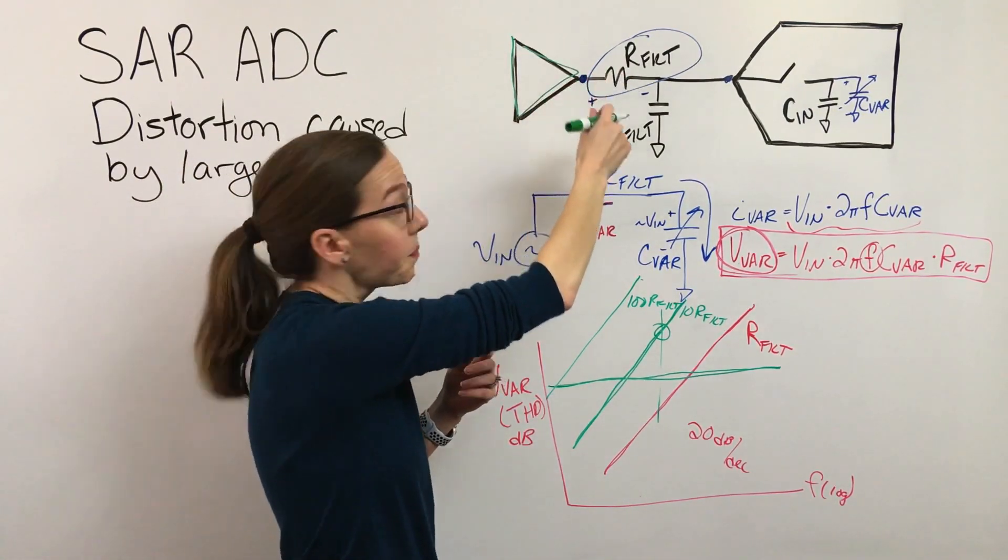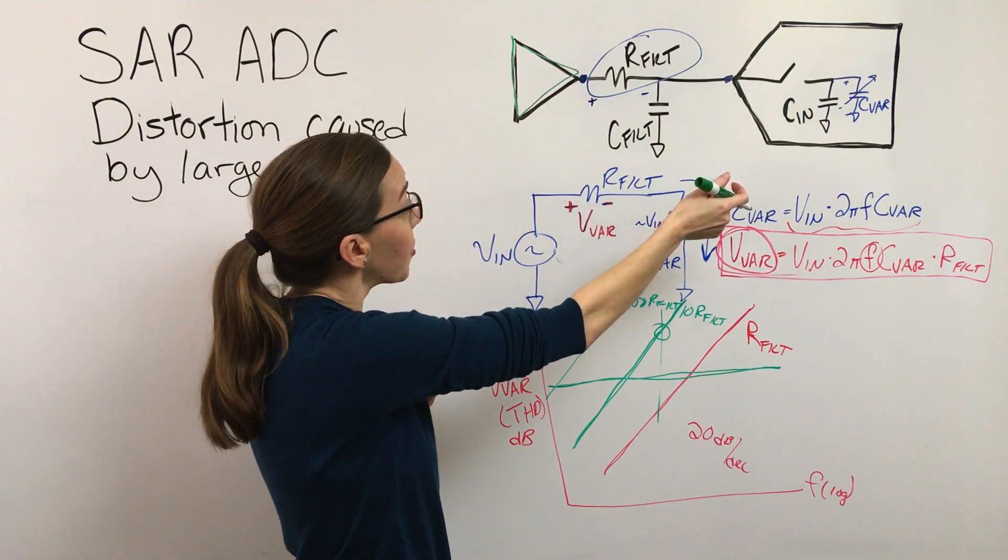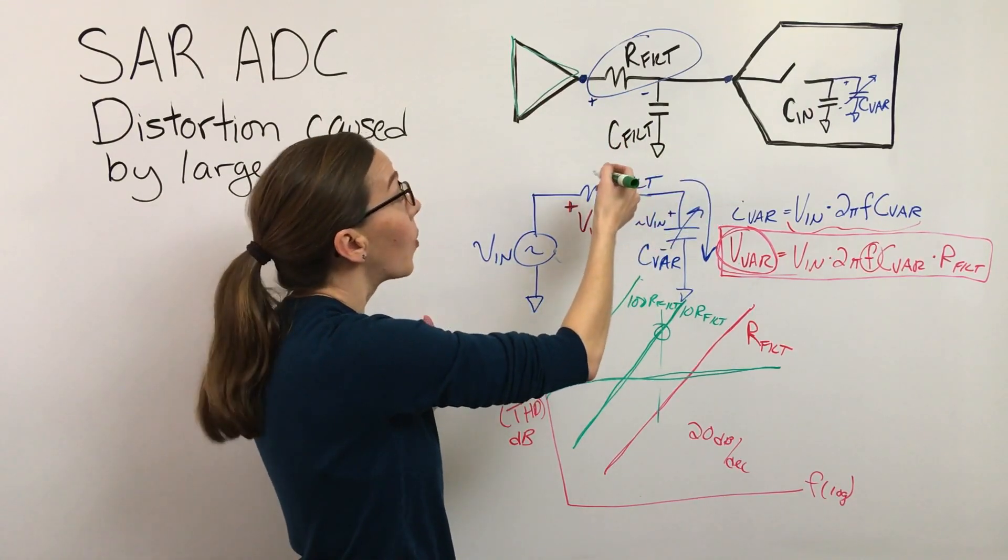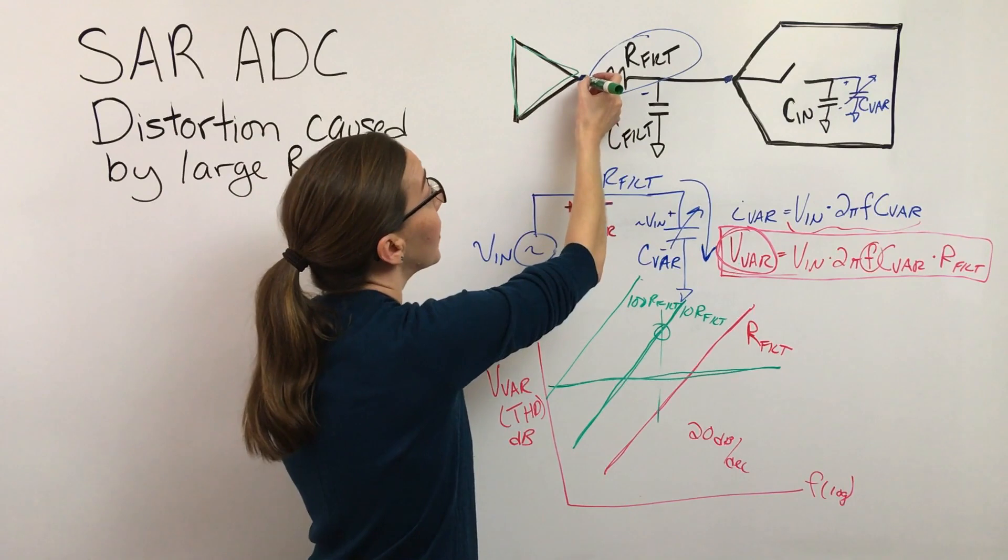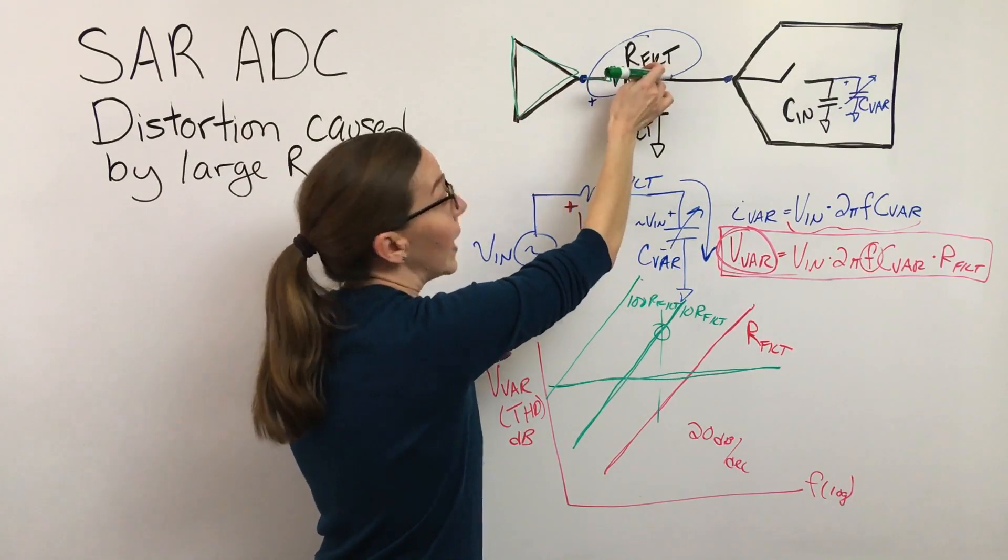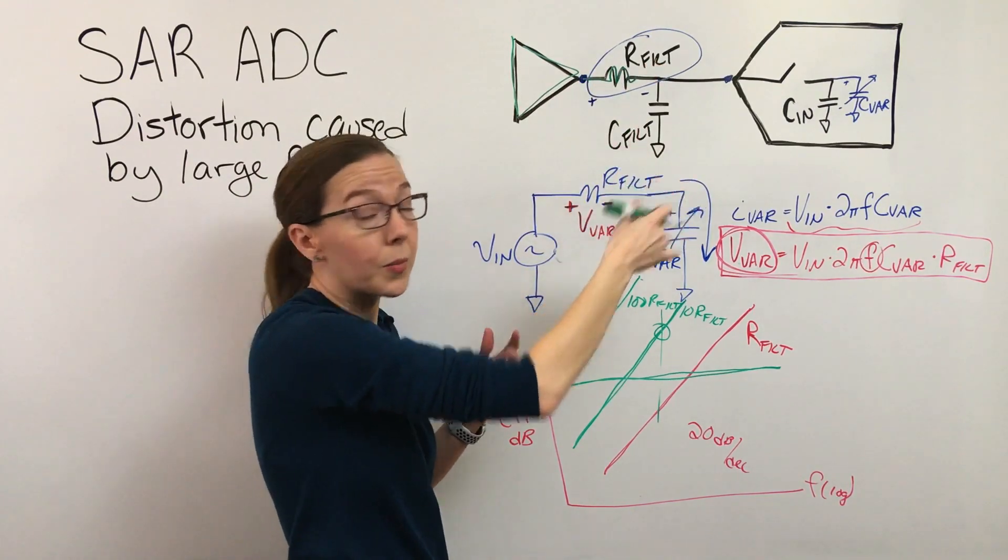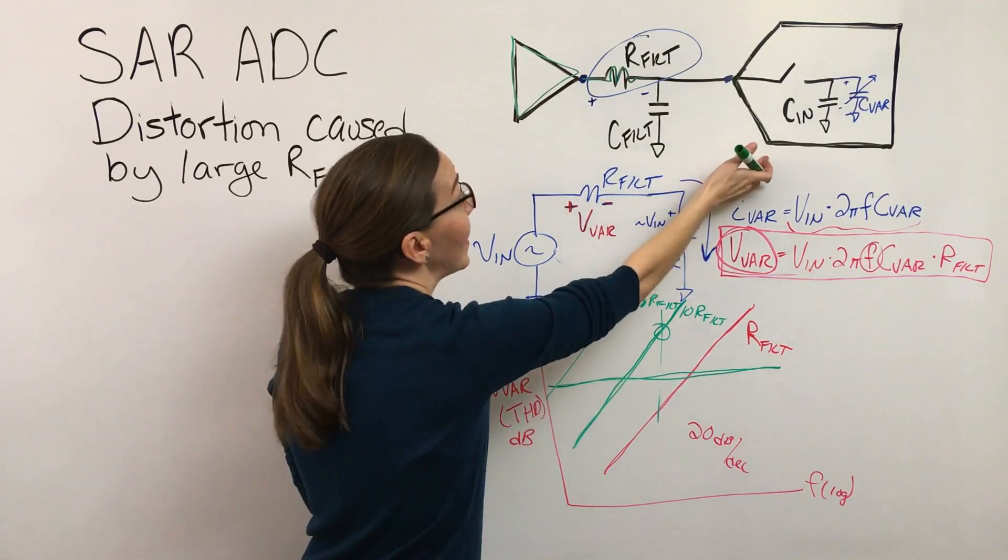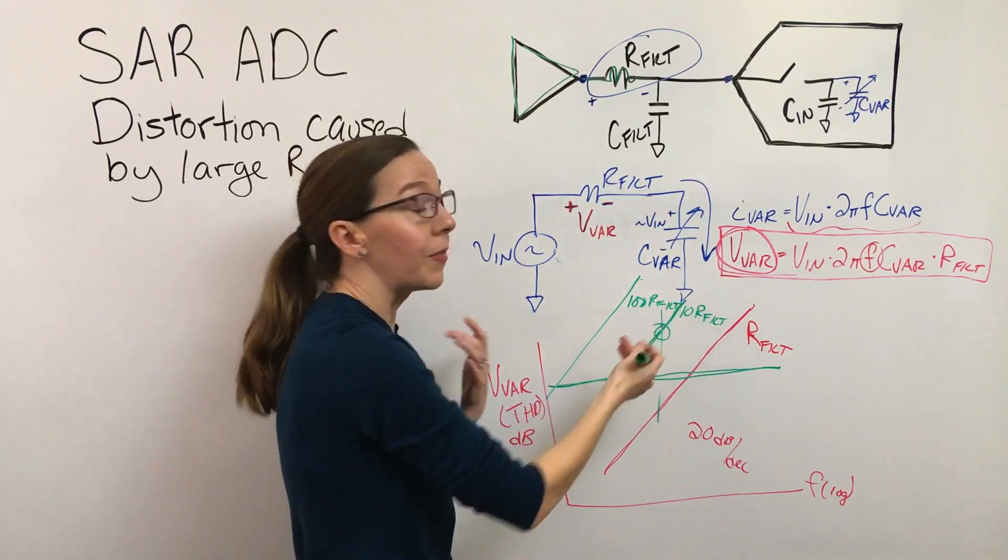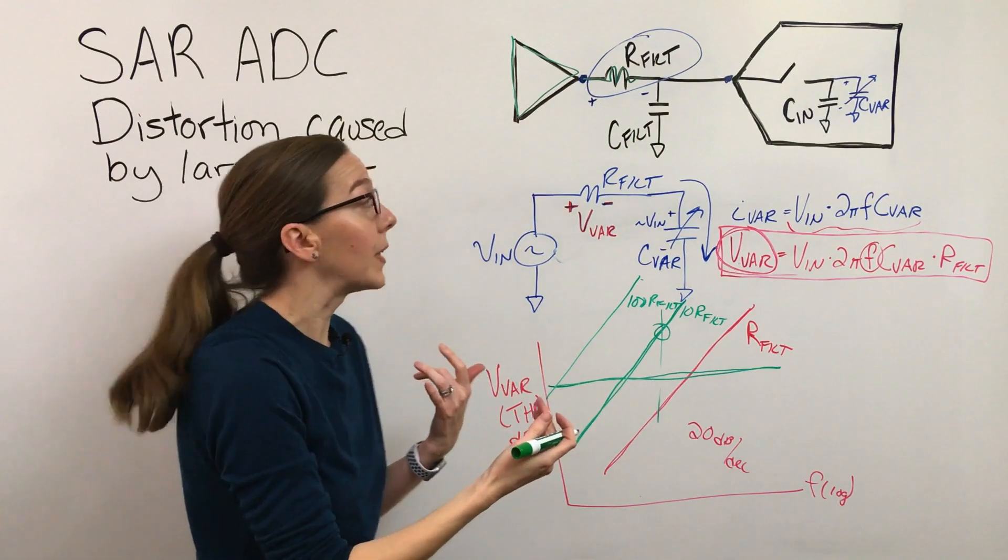On the other hand, your driver—this driver is going to be a lot happier if this resistor value is large. There's a lot of drivers that aren't going to be able to drive if you put 10 ohms here or even 20 ohms. But then there's some ADCs that are going to have increased distortion if you go as high as 30 or 40 or 50.